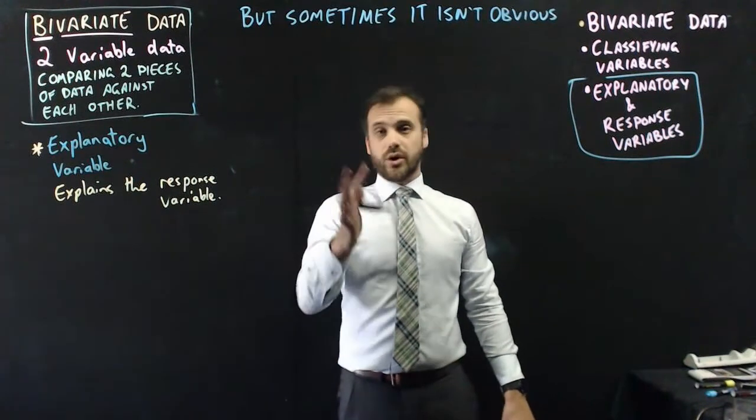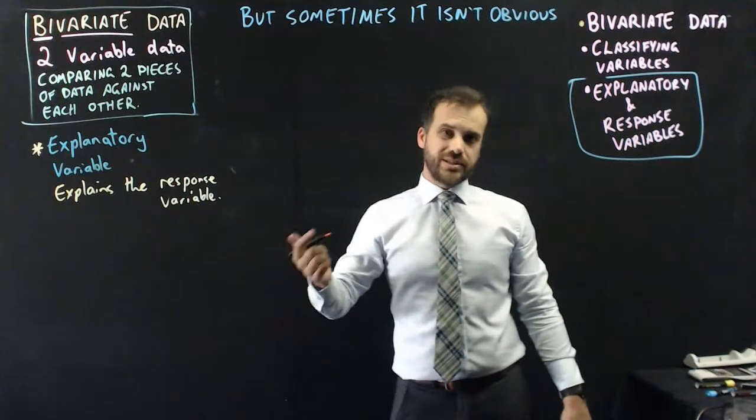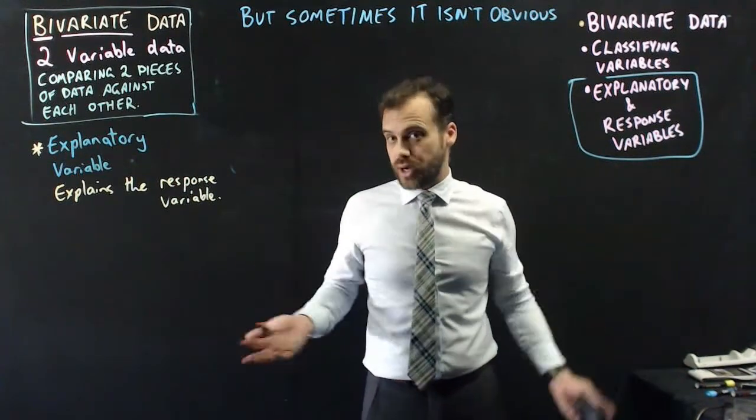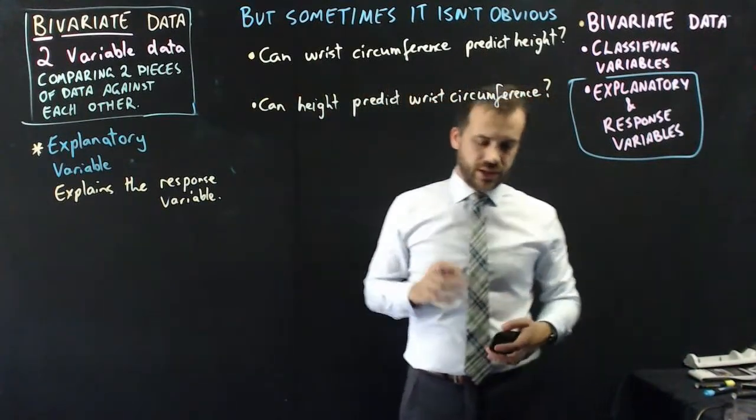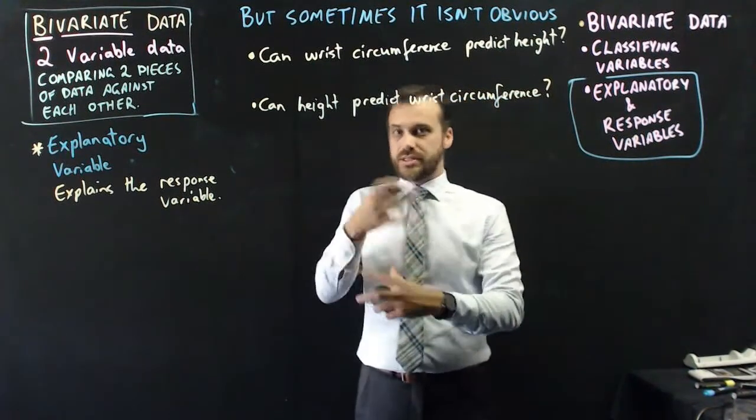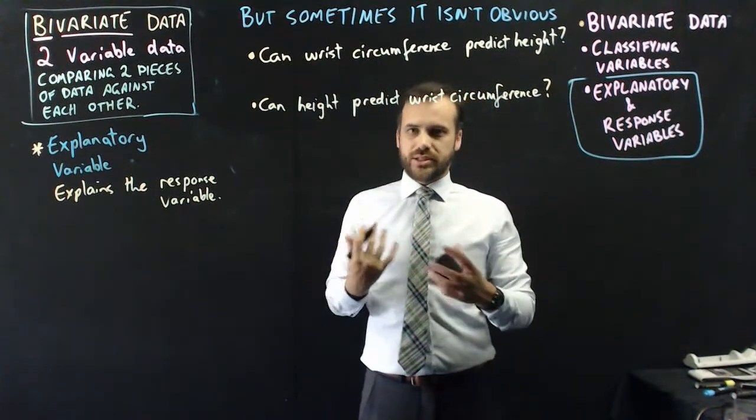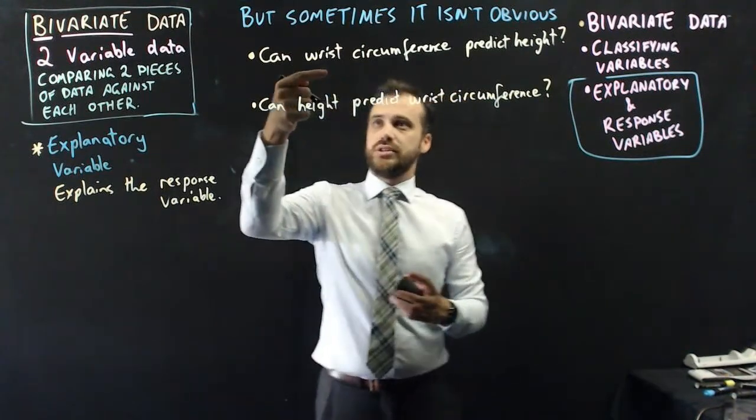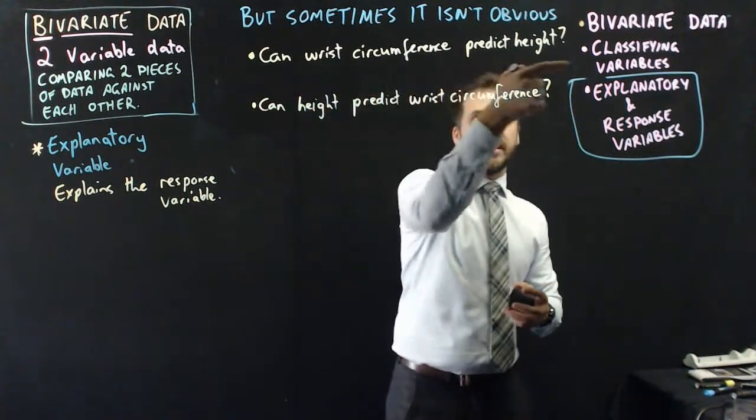So in this case it's pretty obvious, right? Gender is the explanatory variable and homework done is the response. It can't work the other way. Doing your homework does not turn you into a woman or turn you into a man. So we say that gender is our explanatory and homework is our response. But sometimes it really isn't obvious at all which one the explanatory variable and which one the response variable is. And actually you kind of get to choose depending on the statistical question you ask. So two questions here: Can wrist circumference predict height? In other words, can I measure someone's wrist and say to them, look, I've measured your wrist, it's this, and so I think you're this tall.